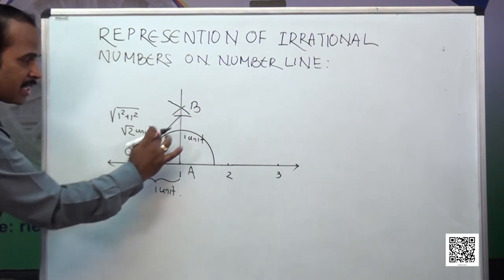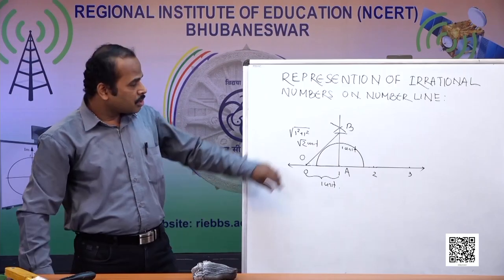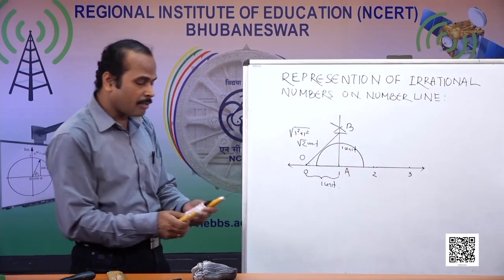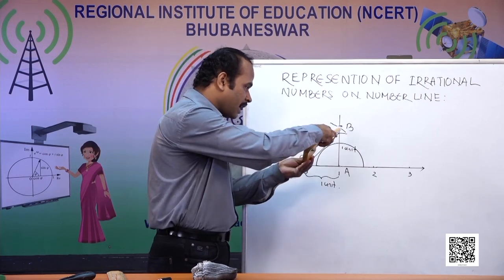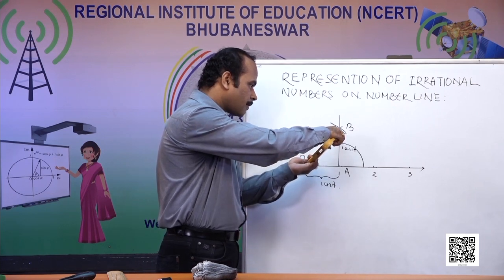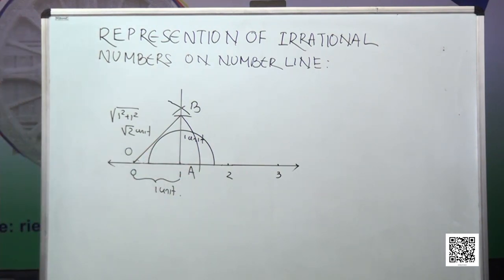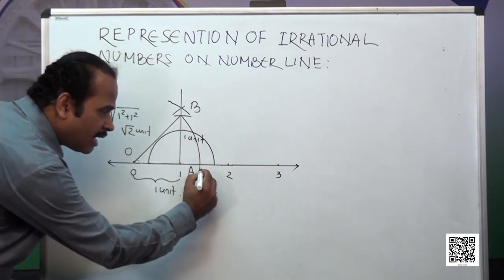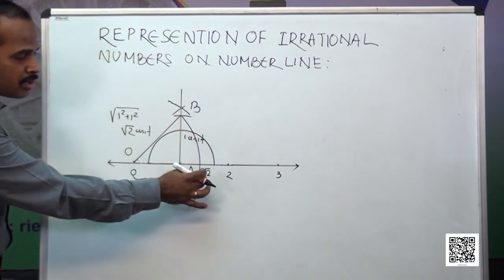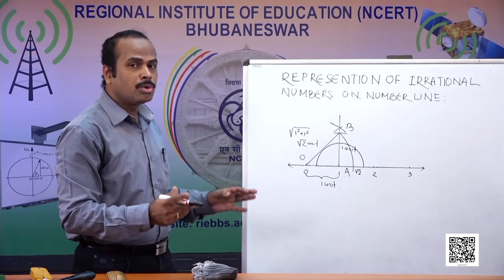This length represents root 2 units when OA is considered as 1 unit. To bring this root 2 unit to the number line, I select the compass, take O as center and OB as radius, and draw an arc. The arc cuts the number line at a point which represents root 2. By this process we brought root 2 onto the number line.